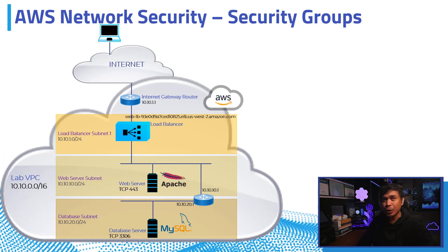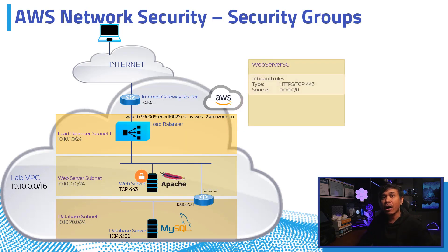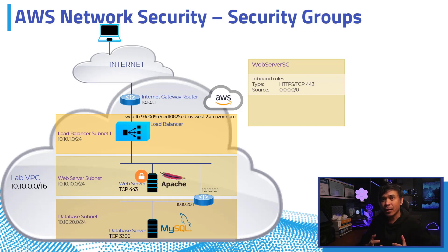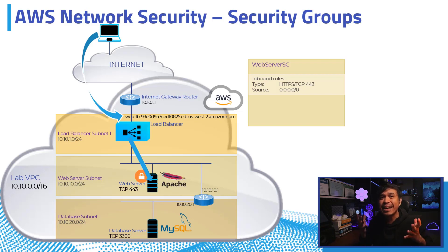We configured the security group for our EC2 instance Apache web server by setting inbound rules. By default, there are no rules or no allowed traffic. All we needed to do was allow HTTPS listening on port 443, TCP port 443. Since this is inbound traffic, we can only configure the source, and since we're allowing clients from the internet, we allowed 0.0.0.0/0. When we tested from the client to the Apache web server via the load balancer DNS, it was successful.